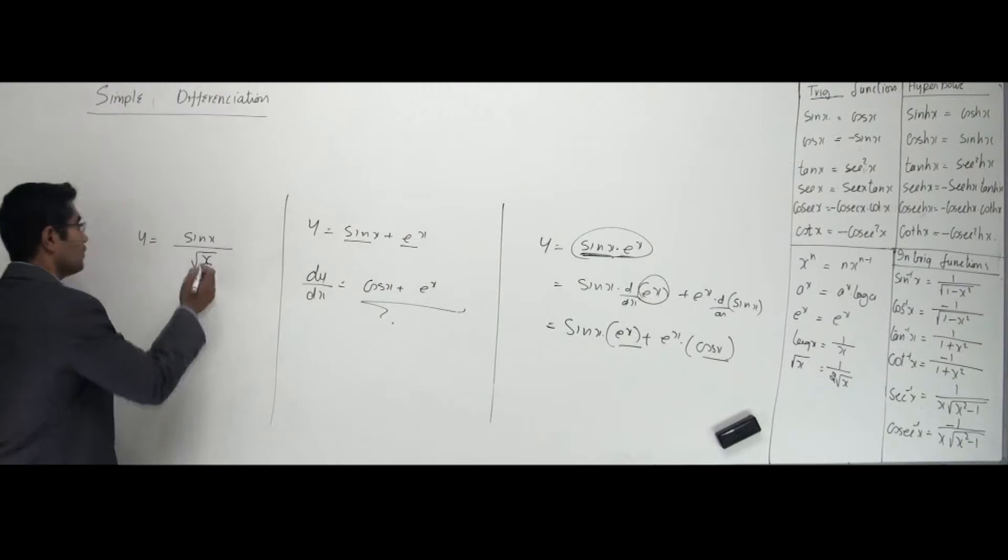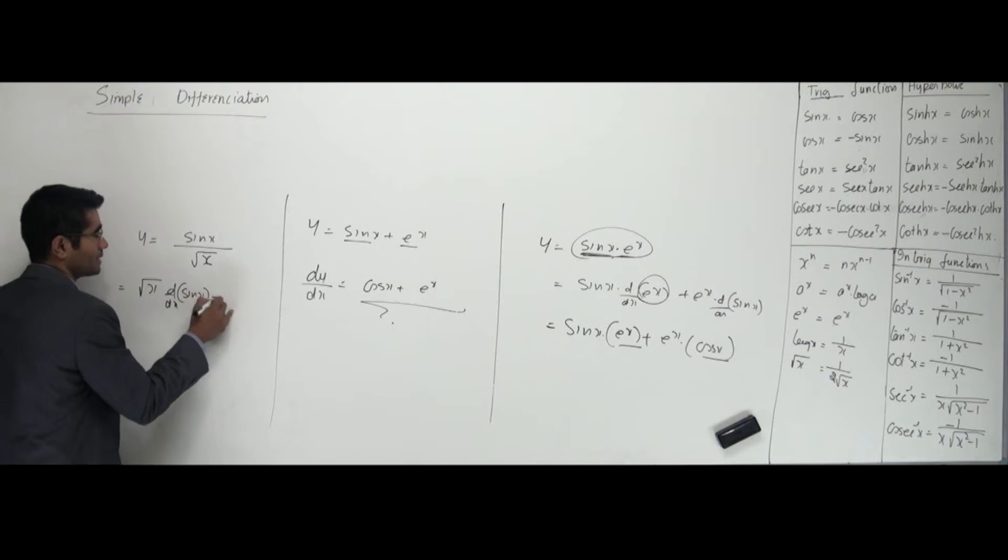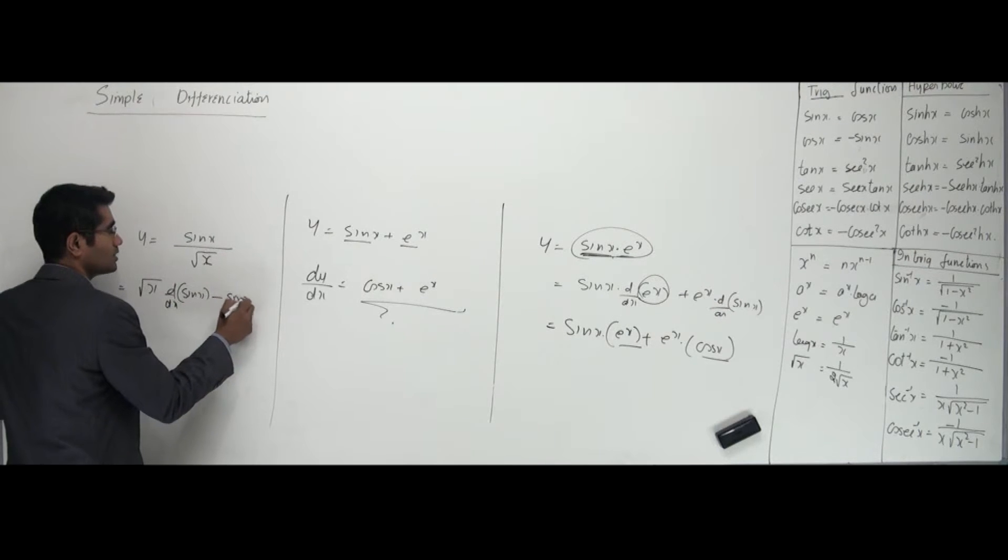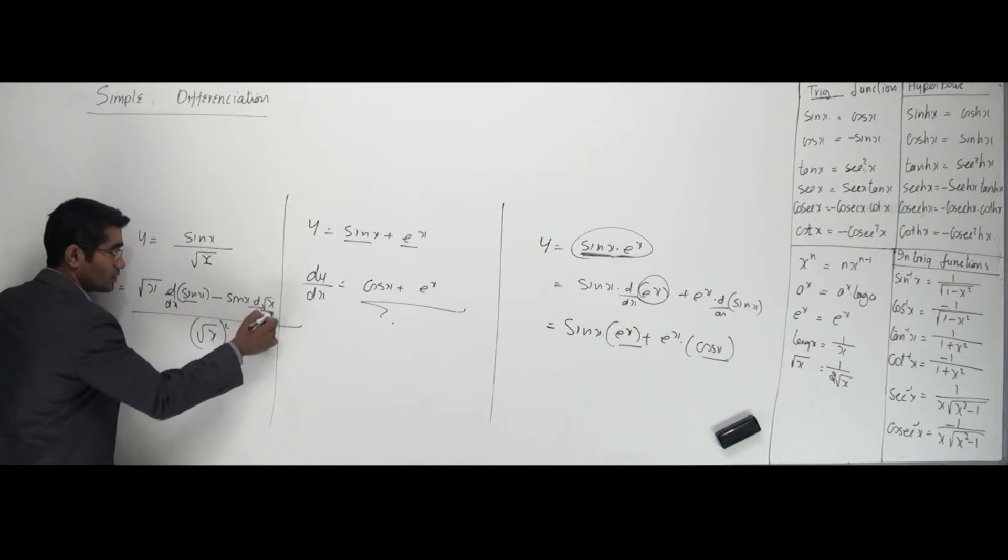What I do here is again I differentiate one at a time. But right now I will tell the denominator guy to stay and differentiate the numerator minus. Tell the numerator guy to stay and differentiate the denominator. Again it's belting divided by root x the whole square. Now this is a different style of writing. That's it. Again I can see that I'm differentiating only one fellow.